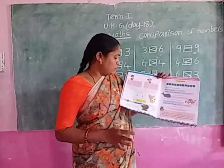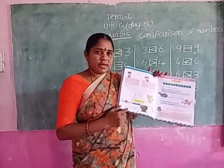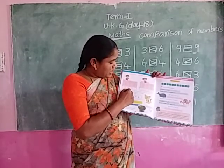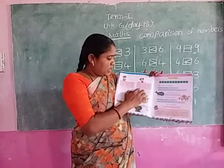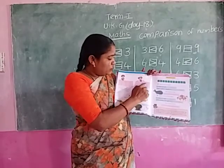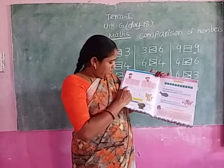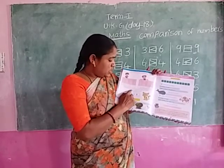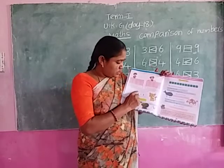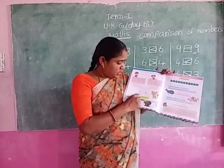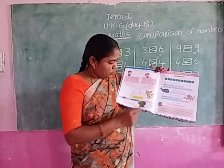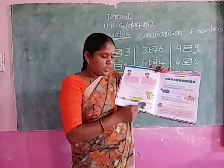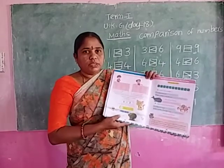Vicky and Jolly have ice cream cones. How many ice cream cones are there here? 1, 2, 3. How many ice cream cones are there here? 3. Both the boxes have an equal number of cones. 3 cones is equal to 3 cones. 3 is equal to 3. We read this as: 3 is equal to 3. This is called the equal to symbol.